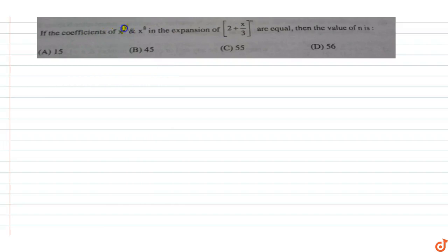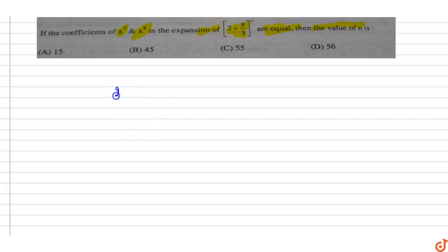In this question, if the coefficient of x raised to power 7 and x raised to power 8 in the expansion of (2 + x/3) raised to power n are equal, then we have to find the value of n. So the expansion we have is (2 + x/3) raised to power n.